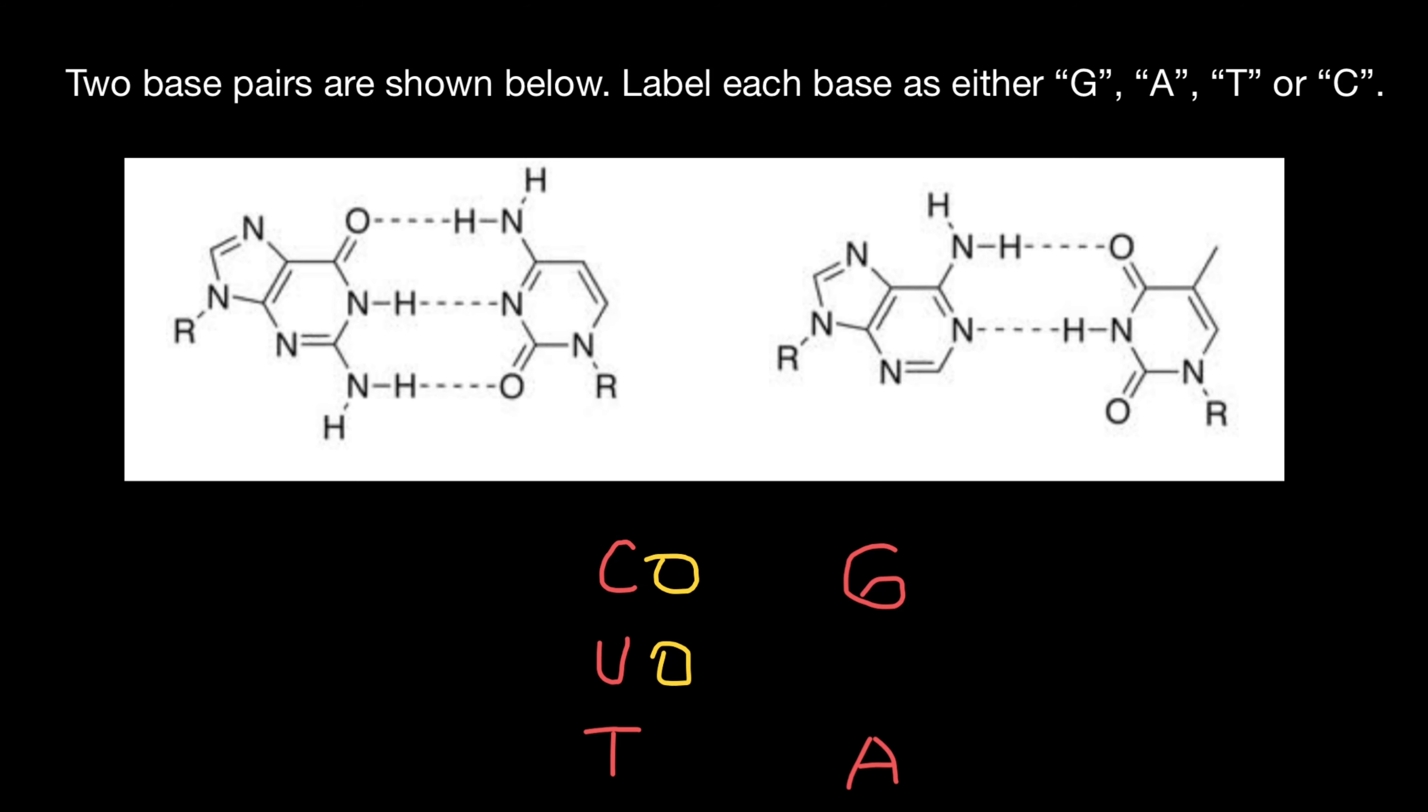And uracil and thymine, basically the same base with only small changes. So in messenger RNA, thymine would be substituted with uracil. And uracil also pairs with adenine just like thymine.